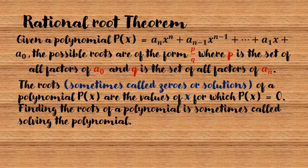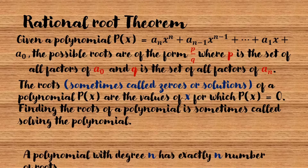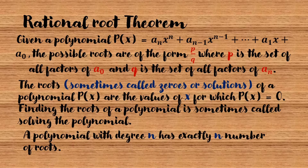The roots, sometimes called zeros or solutions of a polynomial p of x, are the values of x for which p of x equals 0. Finding the roots of a polynomial is sometimes called solving the polynomial. A polynomial with degree n has exactly n number of roots.